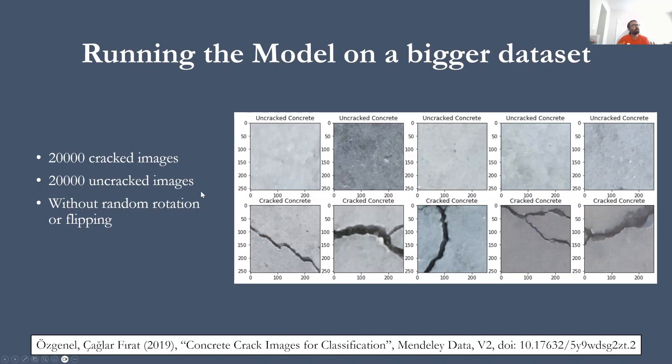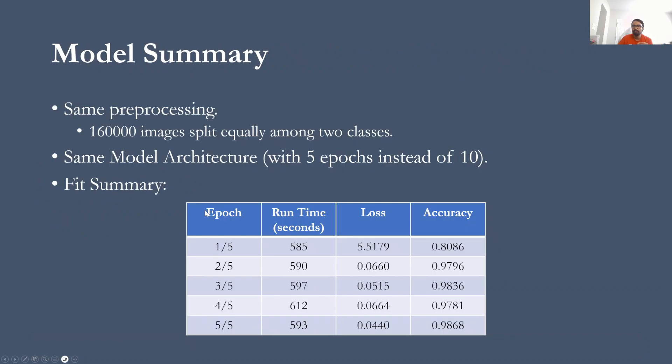And next thing I did was use the same model to build the model again using the same model architecture by using a different set of data, by using the data provided by Firat that they have put in Kaggle. And it basically has 20,000 cracked images and 20,000 uncracked images without any rotation or flipping. So they are unique, basically. So I used those images, I pulled them into my Python environment, and I used the same model architecture to build a model.